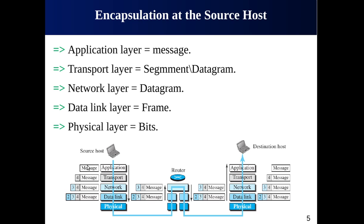We have five layers. The first layer from the top is the application layer, which provides an interface to the user. At the application layer, the data to be exchanged is known as a message. A message normally does not contain any header, trailer, or additional information — there is no encapsulation at the application layer.